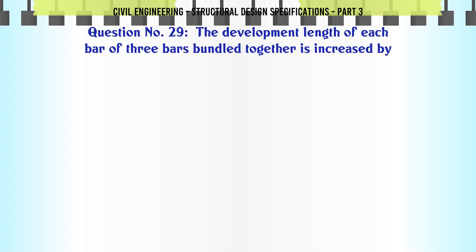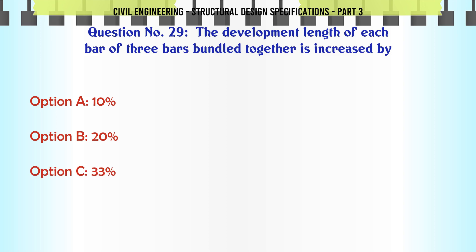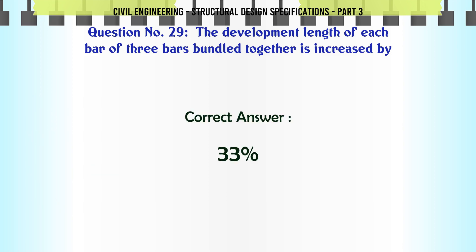The development length of each bar of three bars bundled together is increased by: a. 10%, b. 20%, c. 33%, d. 50%. The correct answer is: 33%.